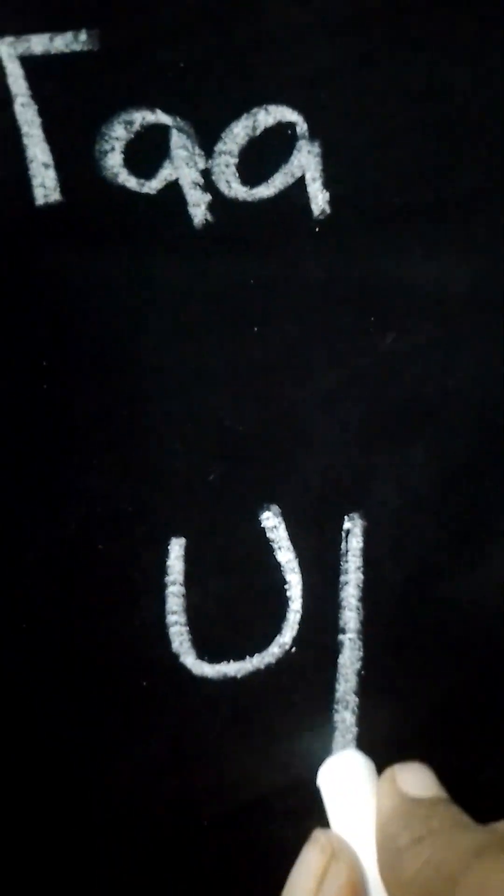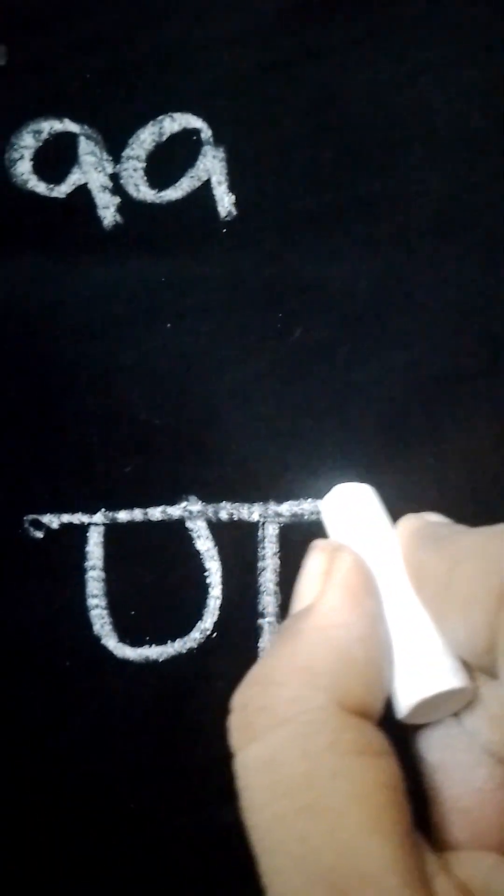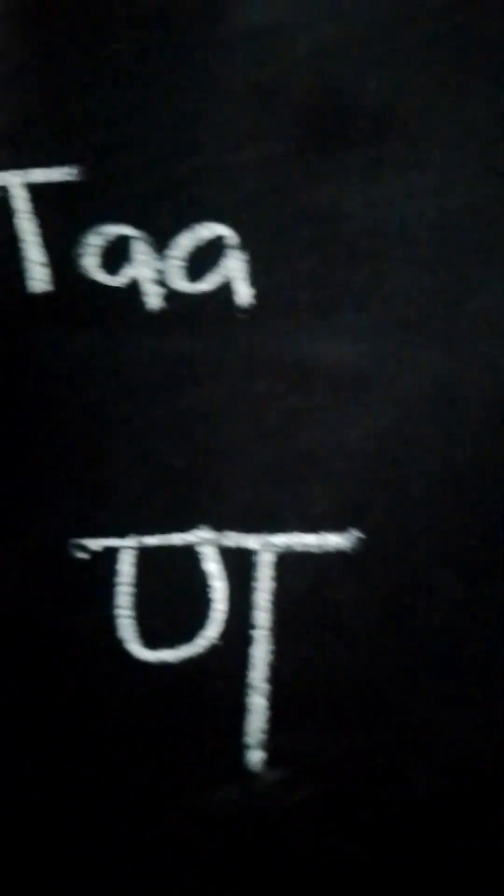So the last alphabet Na. For Na, draw a small semicircle. Besides the semicircle we are going to draw a small standing line, and we are going to join these two lines with a sleeping line at the top. So this alphabet is called Na.